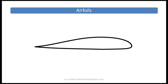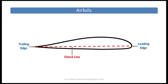Let's have a look at an airfoil and label the different parts. At the front of the airfoil is called the leading edge, and at the very back we have the trailing edge. The cord line is an imaginary line drawn between the leading edge and the trailing edge of an airfoil. This is important as it's used to determine blade pitch angle and angle of attack. These will be covered in later videos.